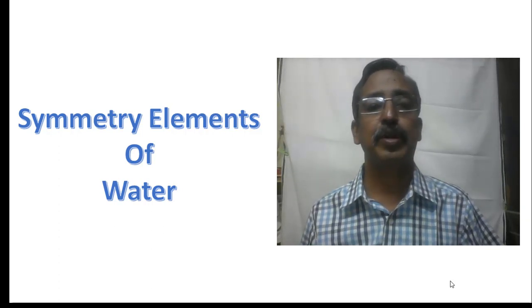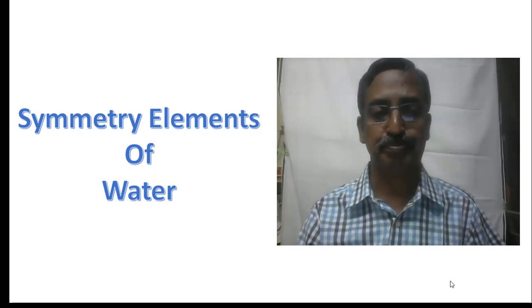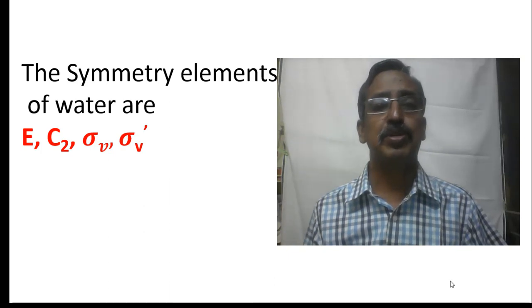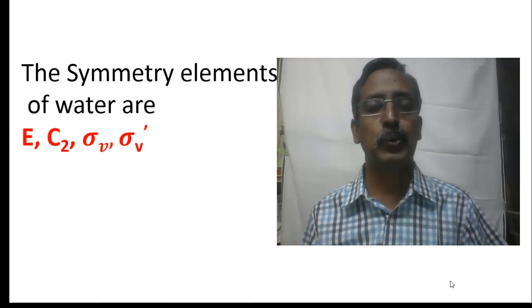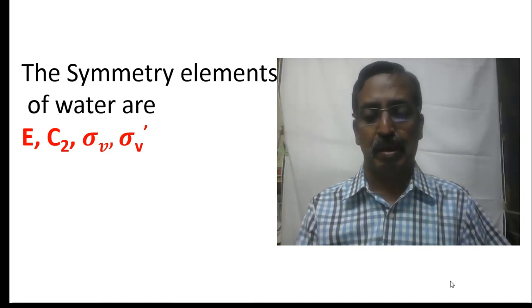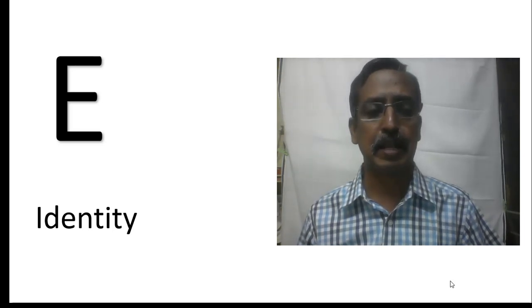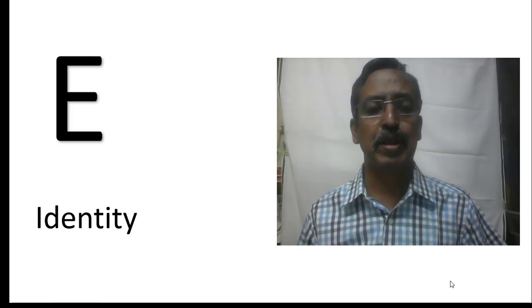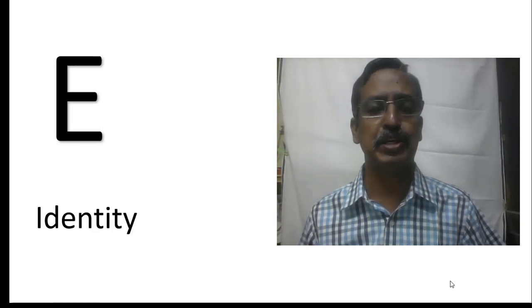In today's video we are going to discuss the various symmetry elements of the water molecule. The various symmetry elements of the water molecule are E, C2, sigma v, and sigma v dash. When we say E, we mean the identity element. The identity operation is the operation of doing nothing — since nothing is being done, there will not be any change in position of atoms and it will always remain the same.